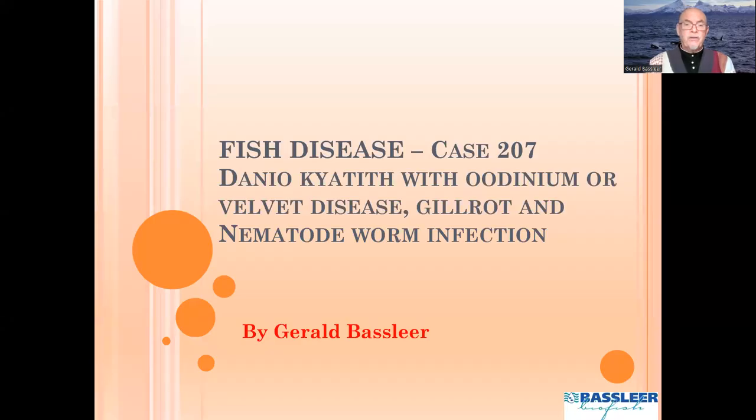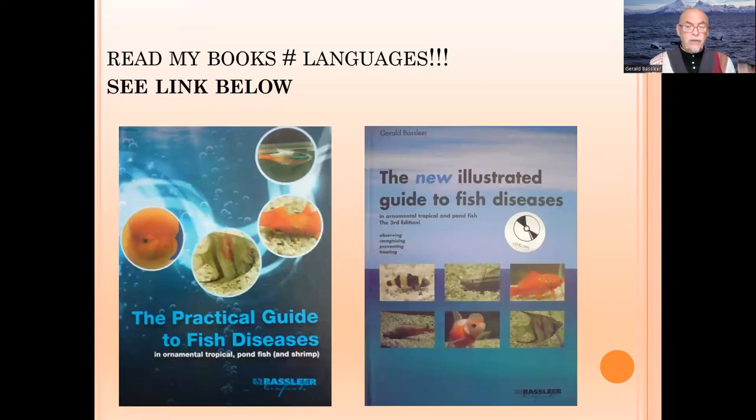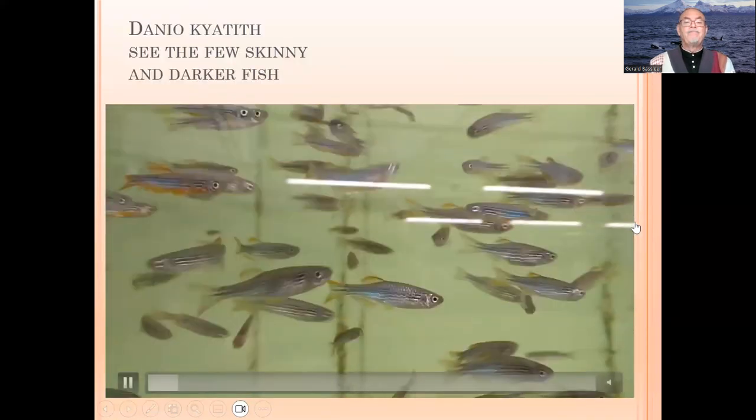Hello dear aquarist, welcome again to one of my cases of fish diseases. Today you selected the one of the danio kyathit — a special danio which is becoming popular in our aquarium industry and hobby. I will show you what I found on this danio by doing my microscopic examination. The danio kyathit had odinium or velvet disease, gill rot, and a nematode worm infection. I will show you my findings and details on prevention, diagnosis, and treatments, which you can find in my books available on my website.